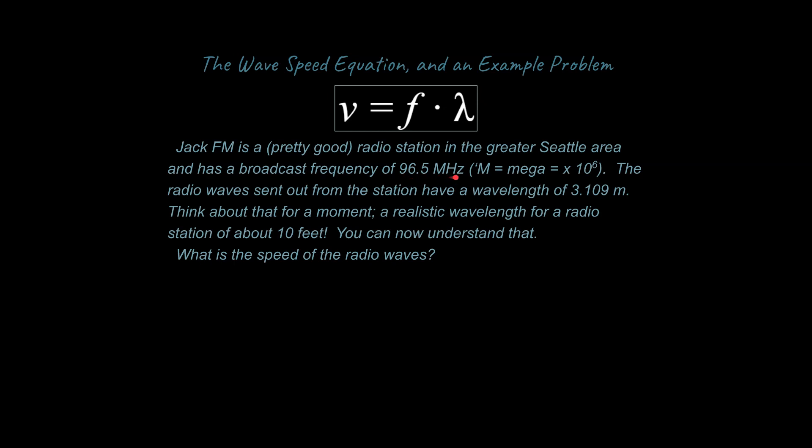Well, that's 96.5 megahertz. That's its frequency that it's being broadcast at. Mega is like times a million or times 10 to the 6, you could say. So it's a very large number. And we know the radio waves are sent out from the station, have a wavelength. By the way, this lambda over here represents wavelength, you could say. And that's 3.109 meters. Think about that for a moment. So a realistic wavelength for a radio station is about 10 feet. If you can imagine that, that will help you to internalize this knowledge and think about what all that means. So the question we have is, what is the speed of the radio waves?